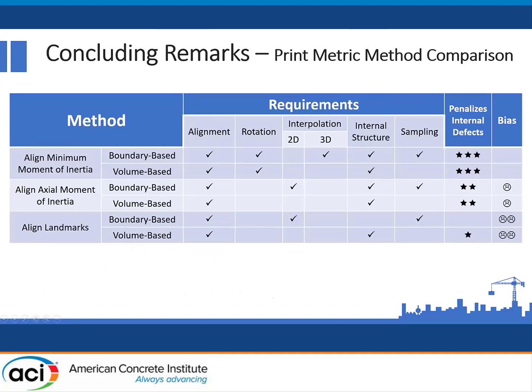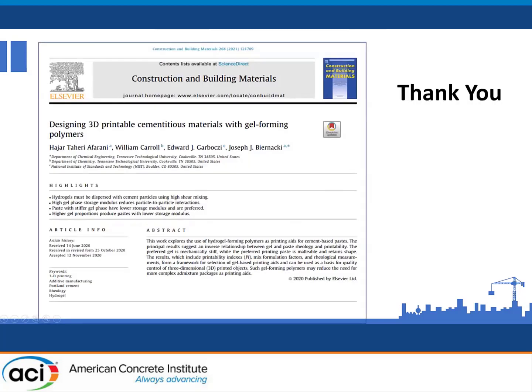In conclusion: not all printability indices are created equally. All of them require some form of alignment, some will require rotation, some have a higher or lesser degree of subjectivity, and some penalize better for internal defects. You may have to do 2D or 3D interpolations, you'll need internal structure if you want to use these types of techniques, and in some cases you'll have to be cognizant of sampling statistics. Some of the work here is based on a recent paper from my graduate student Hager Tahiri. I want to thank coauthors Edgar Bozzi at NIST and my colleague Will Carroll at Tennessee Tech. Thank you for your attention.